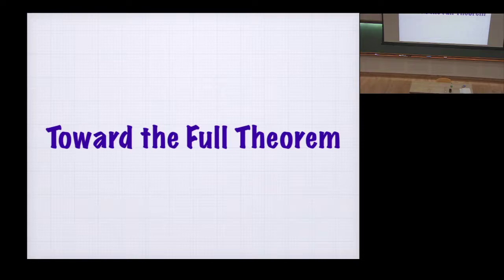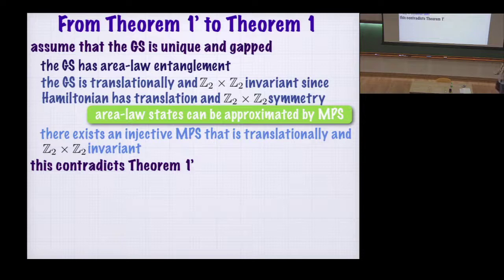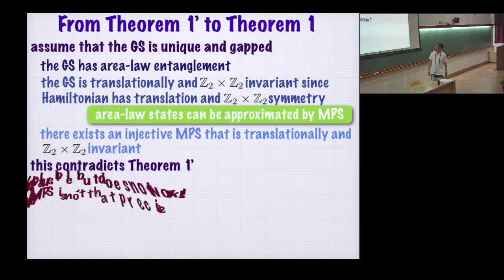Now I want to go to the full theorem. We've shown the MPS result, and now we want to show that a Hamiltonian with these invariances cannot have a unique gapped ground state. It seems like the MPS result implies the full theorem. Here's a simple physicist's argument: assume the Hamiltonian is Z2 cross Z2 and translation invariant with a unique gapped ground state. From Hastings' result, the ground state has area-law entanglement. Since the Hamiltonian has invariance and the ground state is unique, it is translationally and Z2 cross Z2 invariant. By a folk statement that area-law states can always be approximated by MPS, there would exist an injective MPS that is translationally and Z2 cross Z2 invariant—contradicting Theorem 1. But this argument doesn't actually work rigorously.